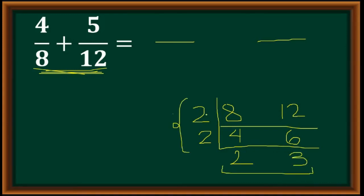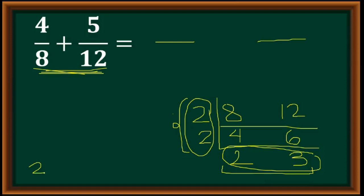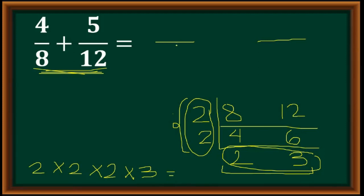We're going to multiply all the numbers on the divisor part and on the last row. So we have 2 times 2 times 2 times 2 times 3 — and that is the LCD of both 8 and 12. So 2 times 2 is 4, times 2 is 8, times 3 is 24. The LCD is 24.